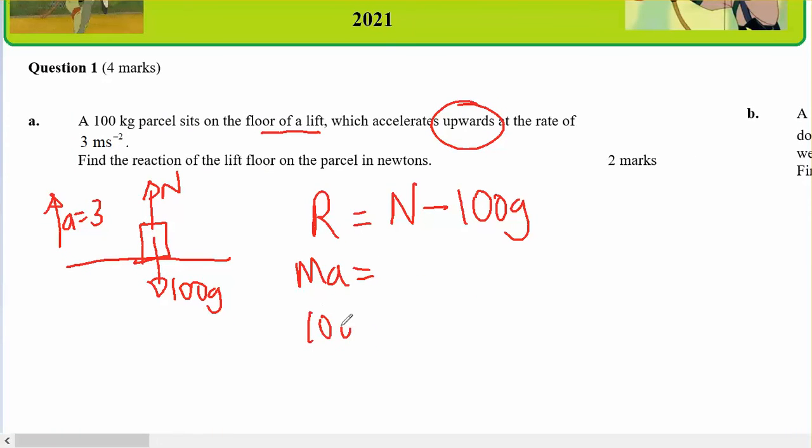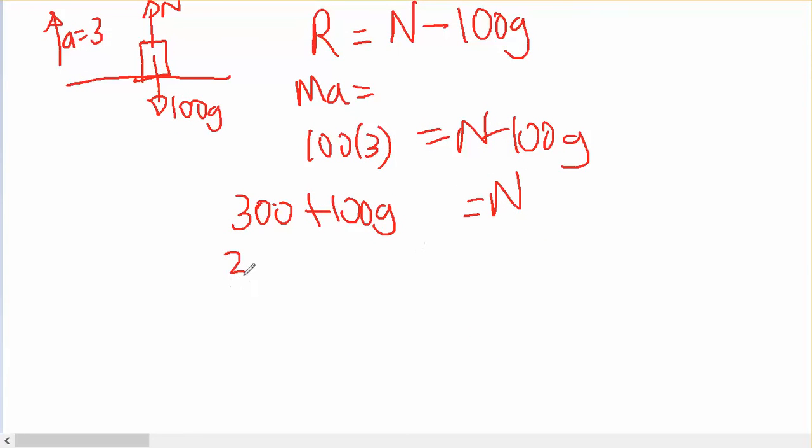So I've got 100 times three equals N minus 100 G. N will equal 300 plus 100 G. G is 9.8, so that's 300 plus 980. So N equals 1280 newtons.